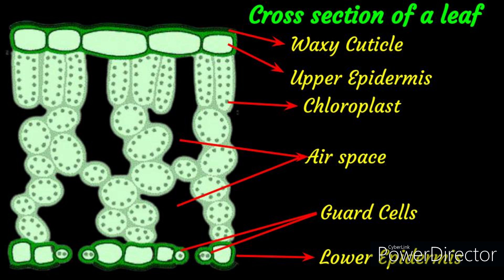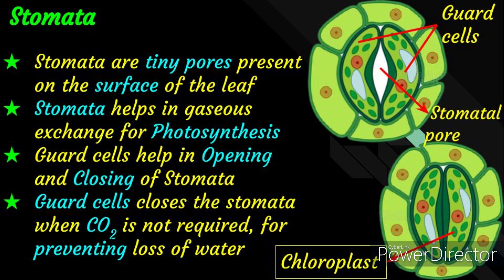Chloroplasts are more in the upper epidermis so that they are able to trap more sunlight, and that is why the upper layer of the leaf is dark in color. The first layer of the leaf is the upper epidermis, and the upper epidermis is covered with a waxy cuticle. The lower layer of the leaf is the lower epidermis. The lower epidermis has tiny openings in its surface called stomata, and stomata are enclosed by guard cells. These guard cells regulate the opening and closing function of the stomata.